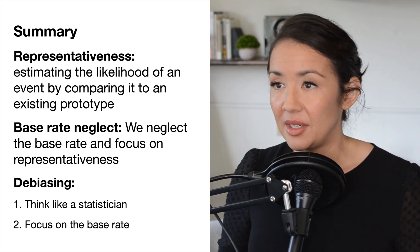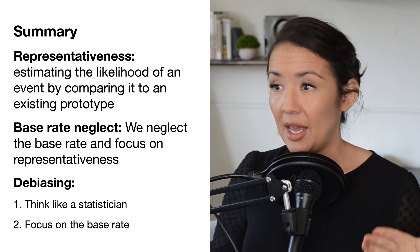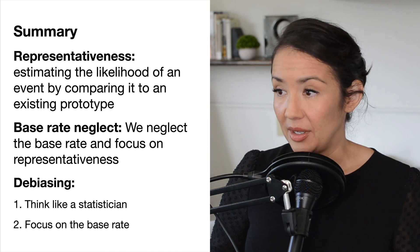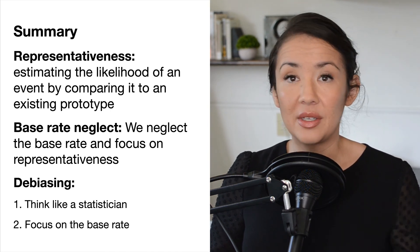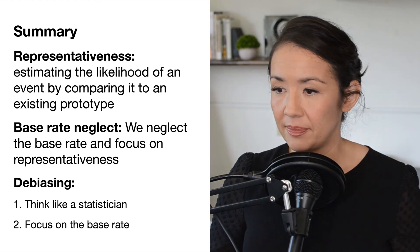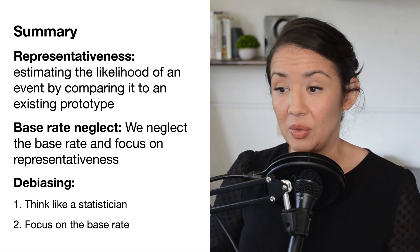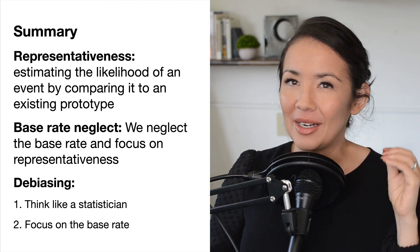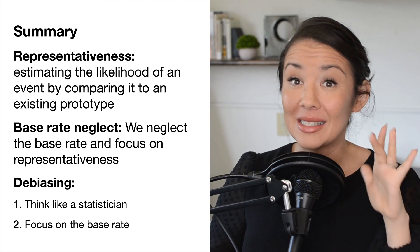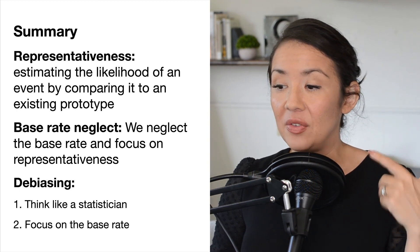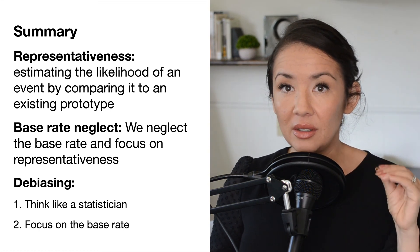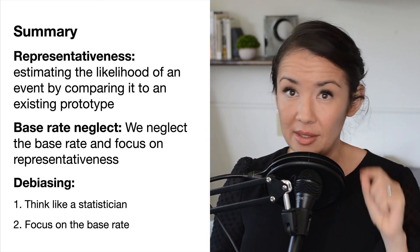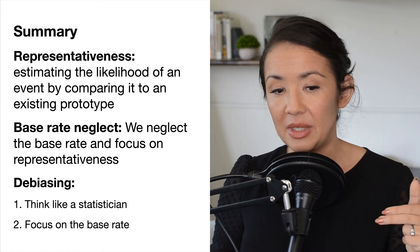Summary: Representativeness is estimating the likelihood of an event by comparing it to an existing prototype, and that leads to base rate neglect — when we neglect the base rate and focus on a representative understanding of something. A few strategies to counteract this include thinking like a statistician: anytime you see a news report, put on your statistician hat. And focus on the base rate — look at how much information they're giving you, how big their sample is. If they don't tell you, it's probably very small and they're hiding that information. Determine if you think it's actually representative.